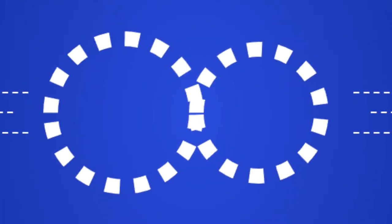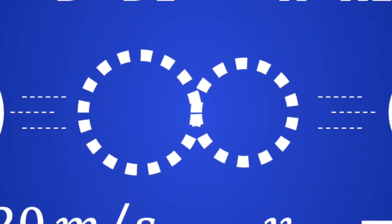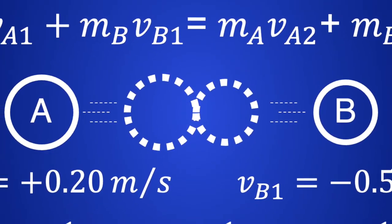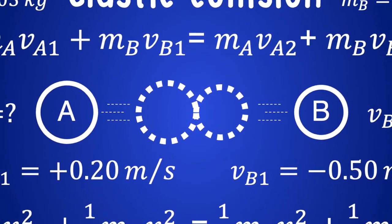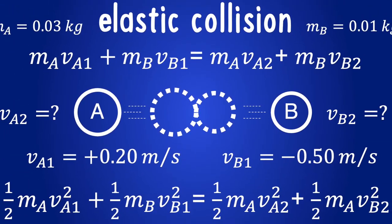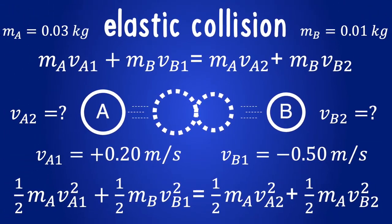This is a classical problem about conservation of linear momentum and kinetic energy, where the final velocities of different masses in an isolated system are calculated based on the initial masses and initial velocities, assuming friction is ignored or neglected.